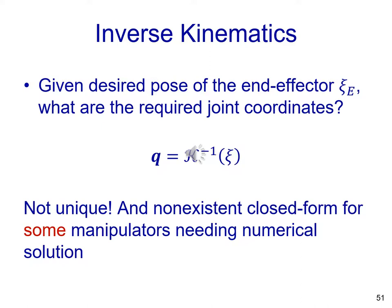For the general case, given the pose — position and orientation of the end effector — described by variable χ_e, the problem is: what are the required joint coordinates? This can be described as an equation where we are trying to find Q, the vector of joint variables, equal to the inverse kinematics function.